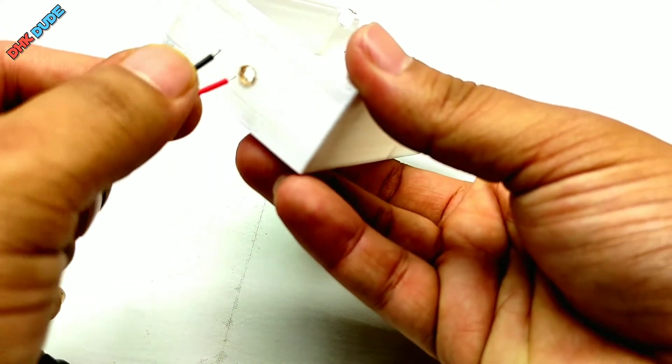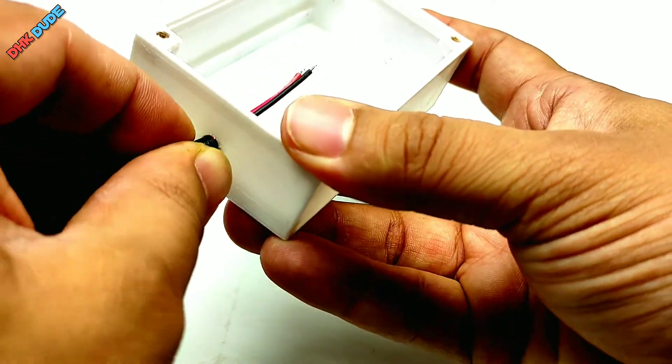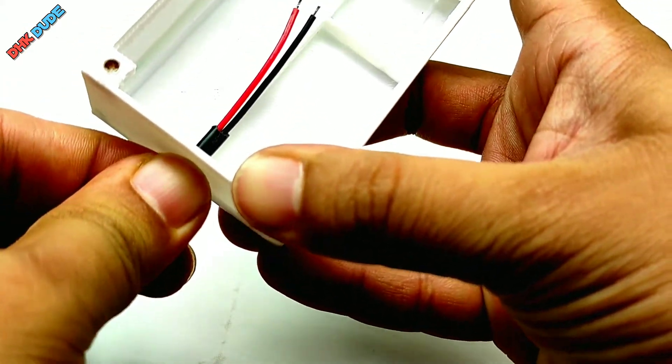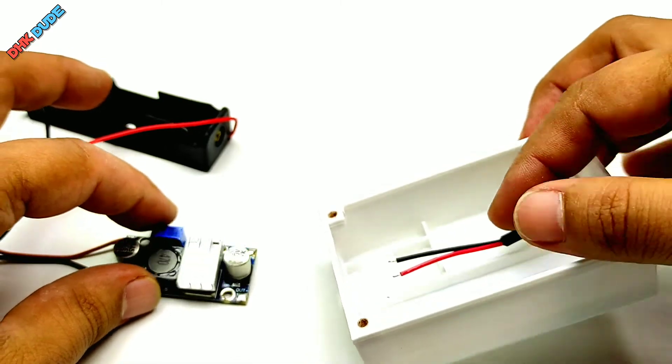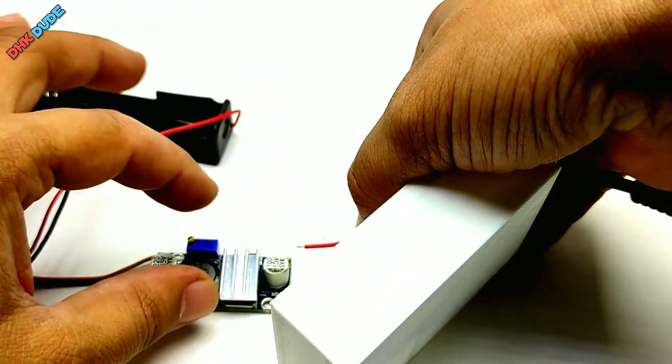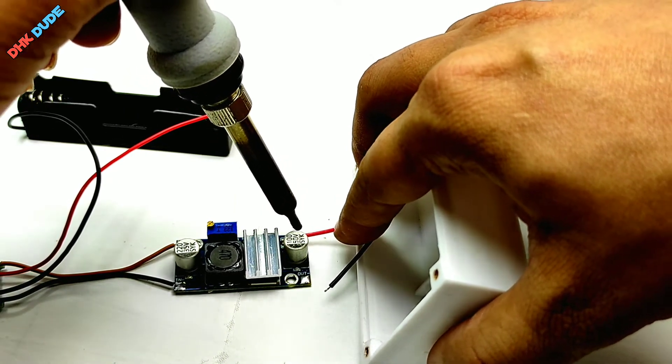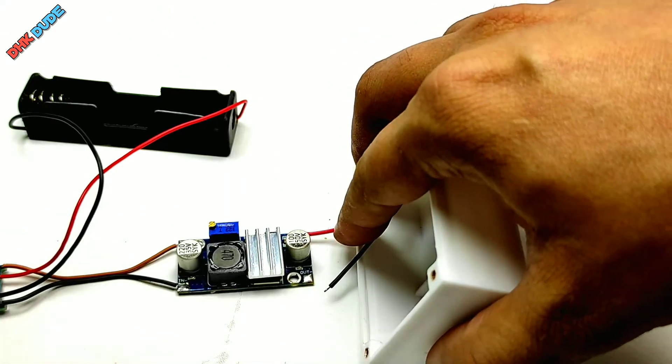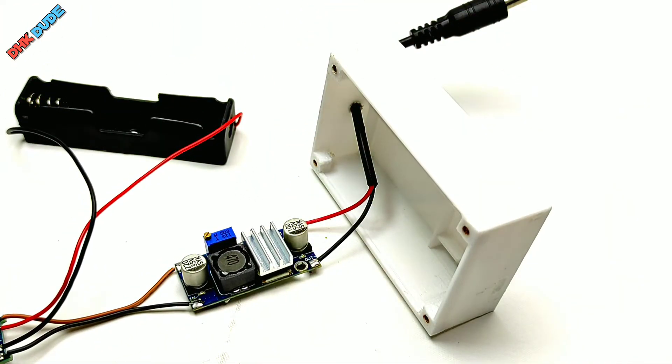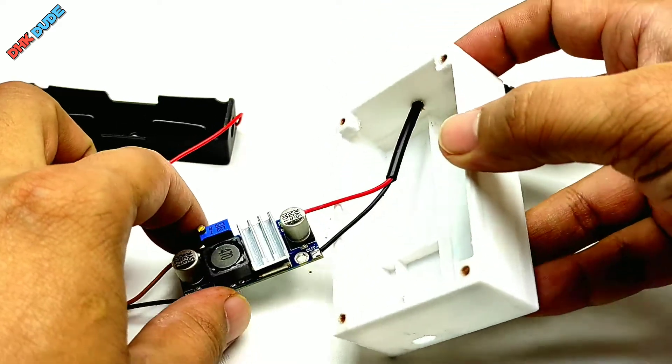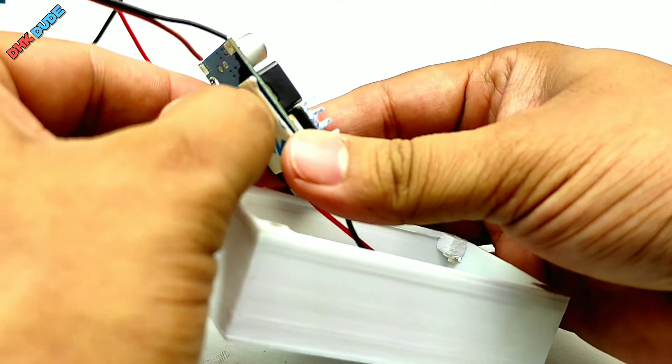Now it's time to solder jack pin to the XL6009 module. Pass the pin wires through the hole of the UPS case. Solder the red wire of jack pin to the OUT+ pad of the XL6009 module and black wire to the OUT- pad of the XL6009 module. Now stick the XL6009 module in the UPS case using double sided tape.